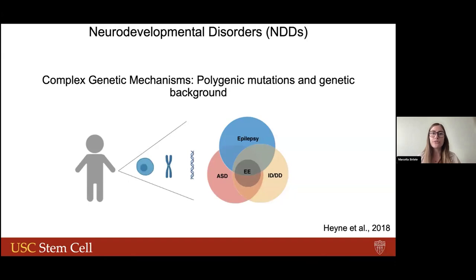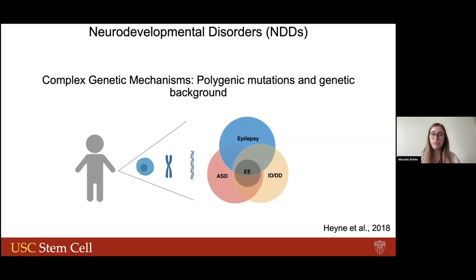One of my main focuses during my postdoc has been to dissect mechanisms of neurodevelopmental disorders. These disorders can be classified as autism, intellectual disability, developmental delay, and many others. One of the characteristics of these disorders is that they're highly heterogeneous in terms of their severity across patients, due to polygenic mutations and the genetic background of each individual.